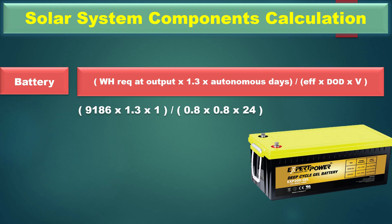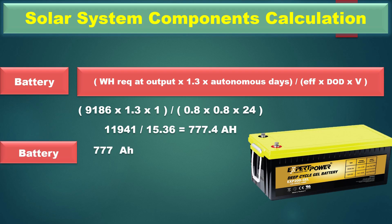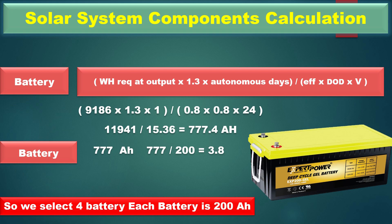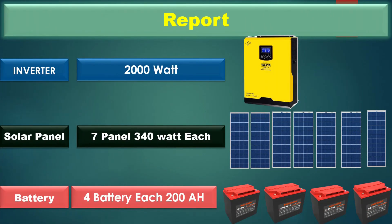Putting all the values into the battery formula: 9186 × 1.3 × 1, divided by 0.8 × 0.8 × 24, gives 11941 divided by 15.36, which equals 777 ampere-hours. We select a 200 ampere-hour battery available in the market: 777 divided by 200 equals approximately 4. So we select 4 batteries, each rated at 200 Ah.